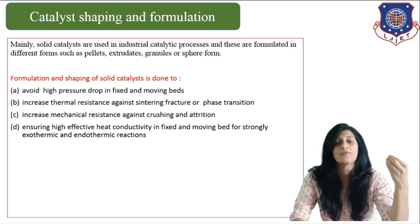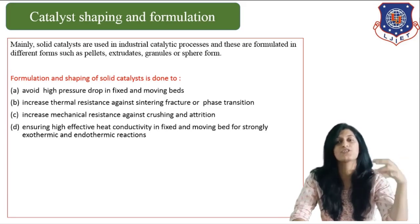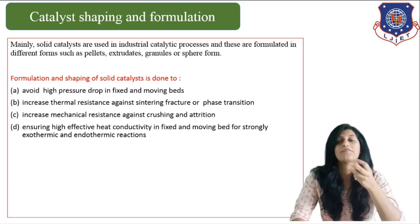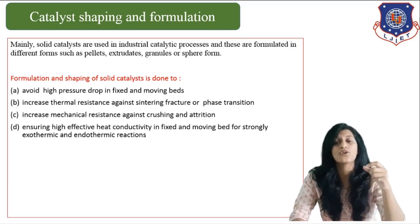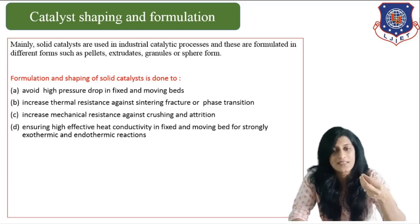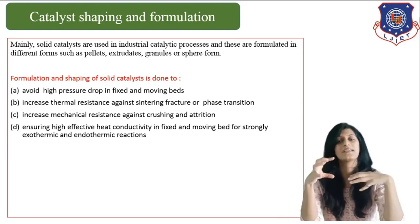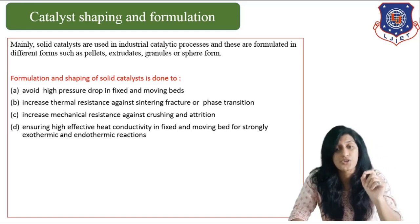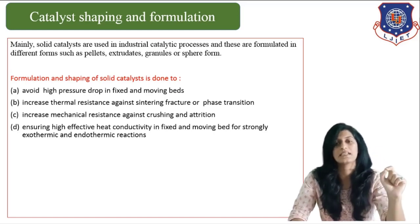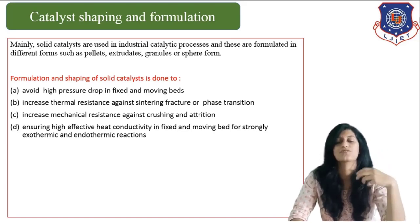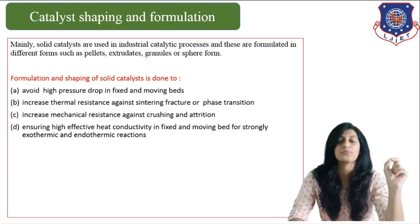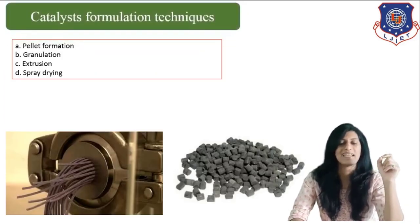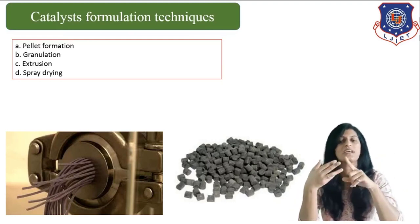Another important reason for giving a catalyst a proper shape is that it can increase thermal resistance against sintering, fractures, or phase transitions. It is also used to increase mechanical resistance against crushing or attrition — catalysts in proper shape can resist any kind of crushing. Lastly, it will ensure high effective heat conductivity in the bed and moving bed for strong exothermic reactions. Catalyst formulation techniques include pellet formation, granulation, extrusion, and spray drying.